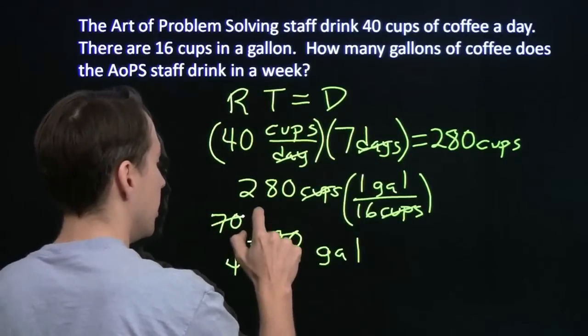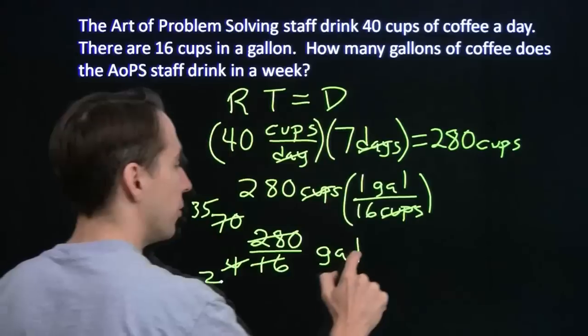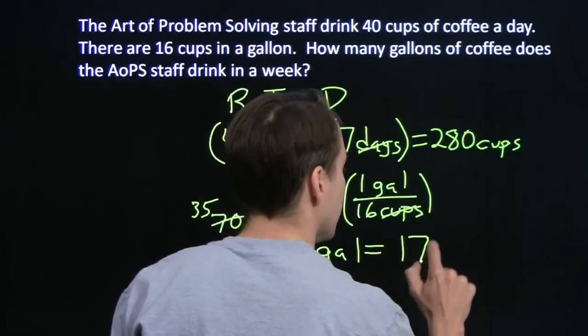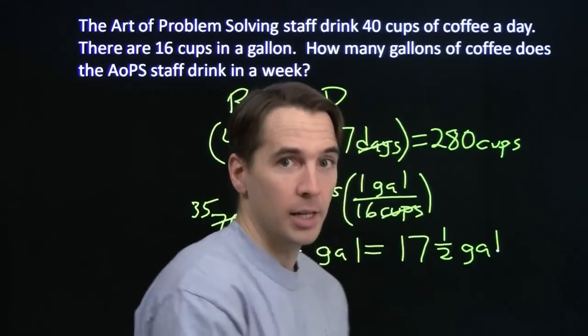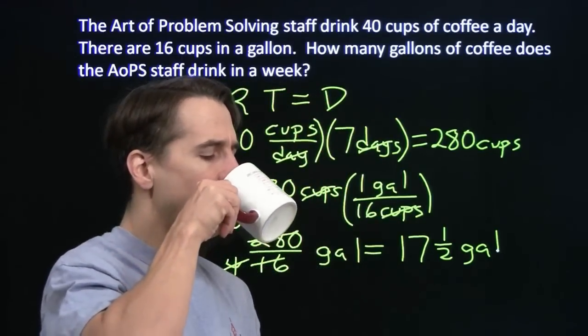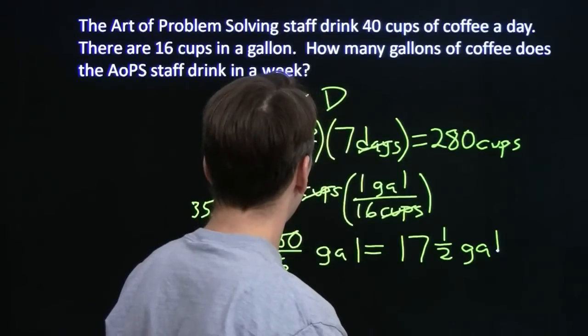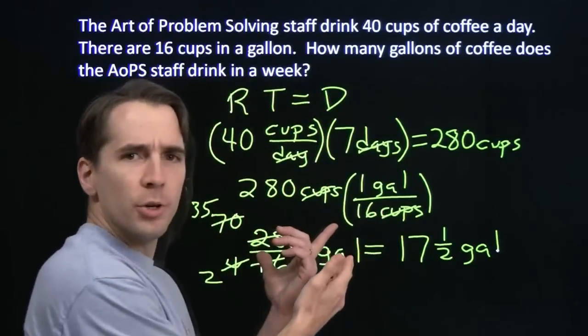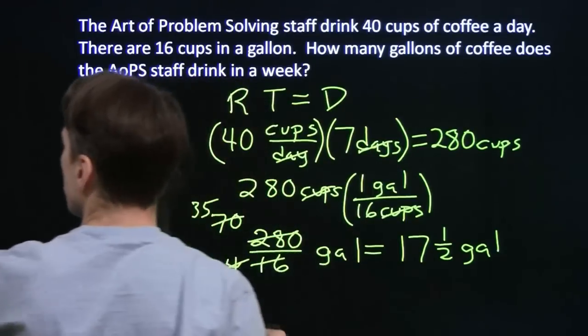It's 70 over 4. We've got another common factor, this time of 2. We have 35 over 2. 35 over 2 is 17 and a half gallons. That's a lot of coffee, precious, precious coffee. Hey, wait a second. We could have used conversion factors to solve the whole problem. We didn't even have to mess around with this rate times time stuff.